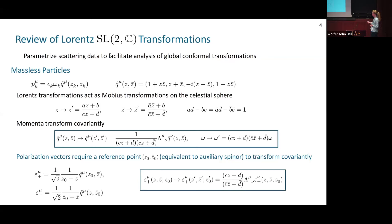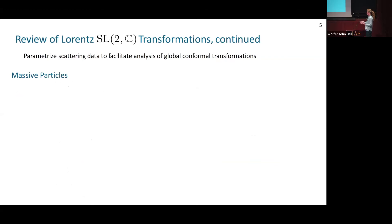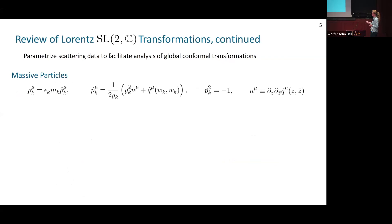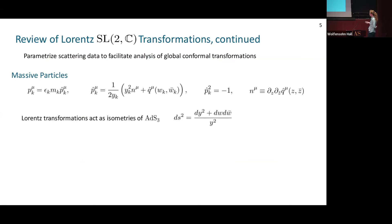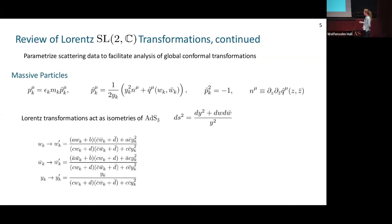Massive particles go to timelike infinity rather than null infinity, parameterized by sign epsilon, mass m, and a direction vector involving points y, w, and w-bar on a spatial hyperboloid or Euclidean AdS3, with n a fixed vector. The metric here is the Euclidean AdS3 metric, and Lorentz transformations act as isometries. Putting it all together, we recover the usual vector transformations. We'll look at these transformations to see how the subleading terms in the soft expansion transform.